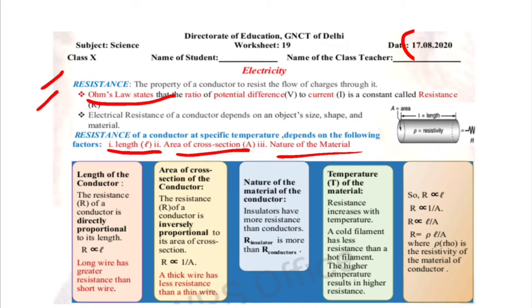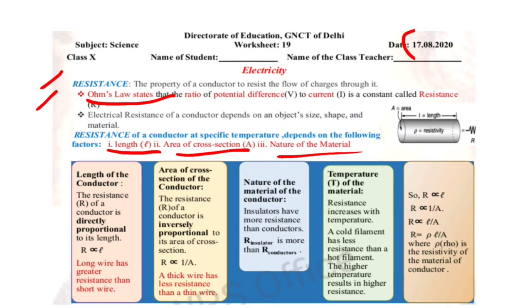If we talk about the length of the conductor: resistance is directly proportional to the length of the conductor. The longer the wire, the greater the resistance. If the wire has greater length, it has more resistance.